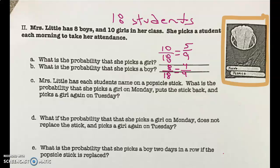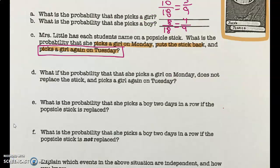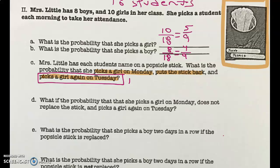Letter C: Miss Little has each student's name on a popsicle stick. What is the probability that she picks a girl on Monday, puts the stick back, and picks a girl again on Tuesday? This question is only asking about Tuesday — not Monday and Tuesday combined. She puts the stick back, so on Monday the probability of picking a girl is ten out of 18. She puts that stick back, so on Tuesday it's also ten out of 18. Simplify that to five-ninths.